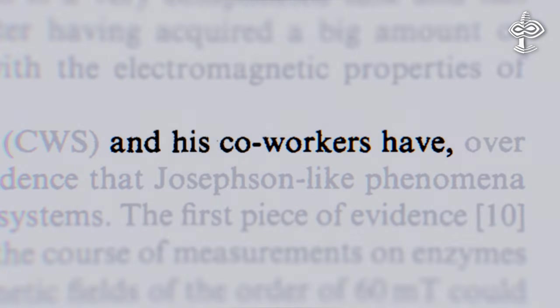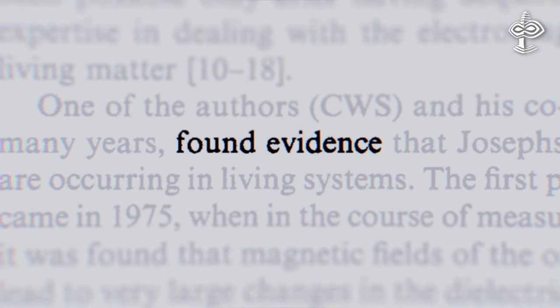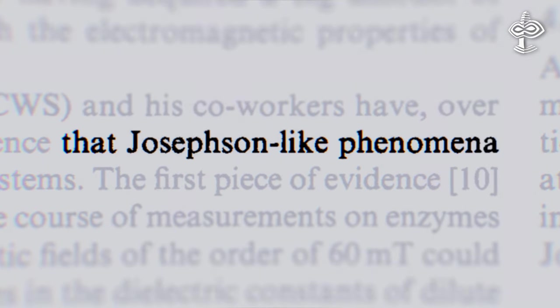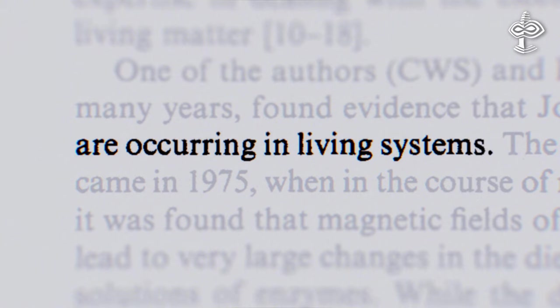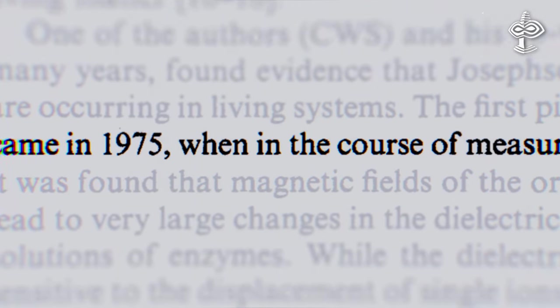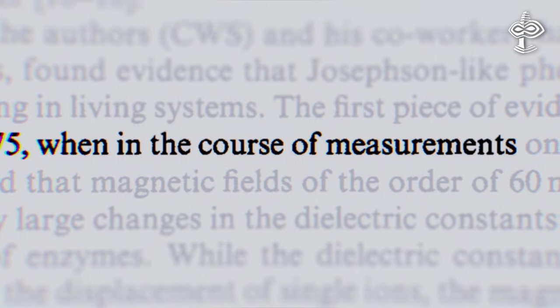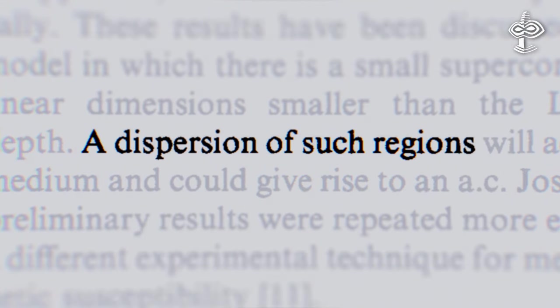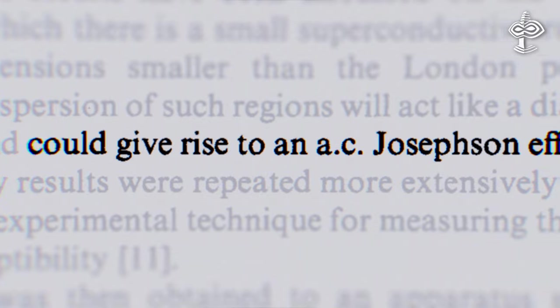Quote: One of the authors and his co-workers have, over many years, found evidence that Josephson-like phenomena are occurring in living systems. The first piece of evidence came in 1975 that there is a small superconductive region.